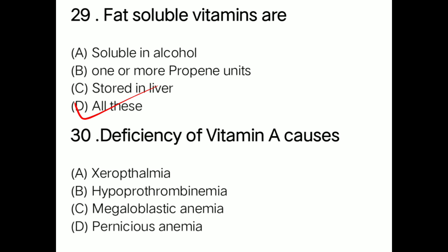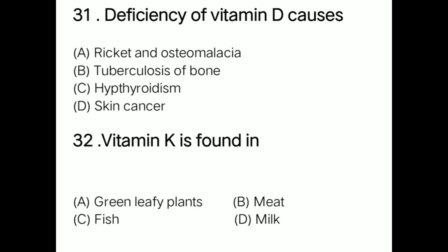Question: Deficiency of vitamin A causes option A xerophthalmia, option B hypoprothrombinemia, option C megaloblastic anemia, option D pernicious anemia. Correct answer is option A: xerophthalmia. Question: Deficiency of vitamin D causes option A rickets and osteomalacia, option B tuberculosis of bones, option C hypothyroidism, option D skin cancer. Correct answer is option A: rickets and osteomalacia.